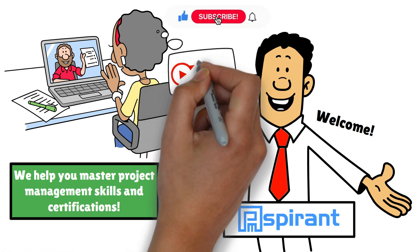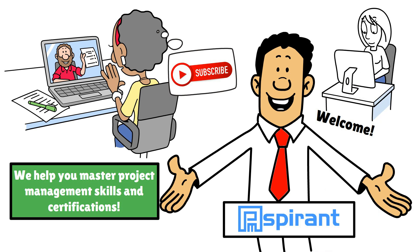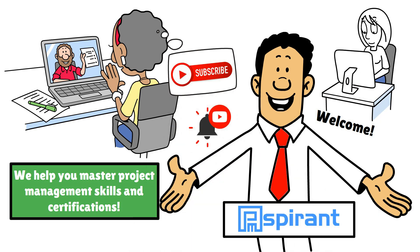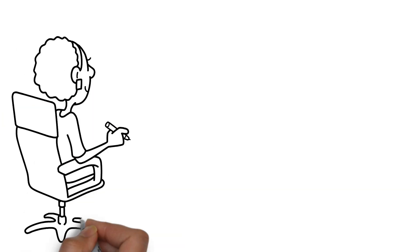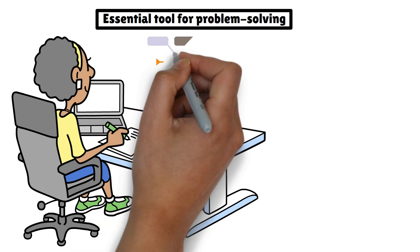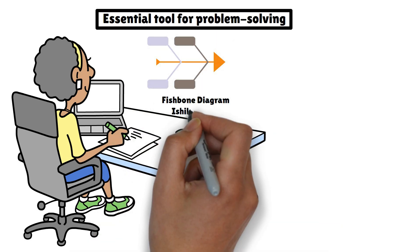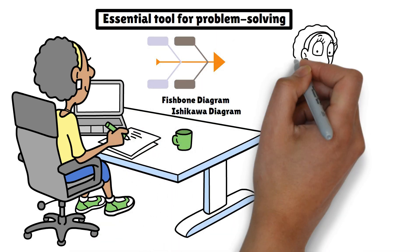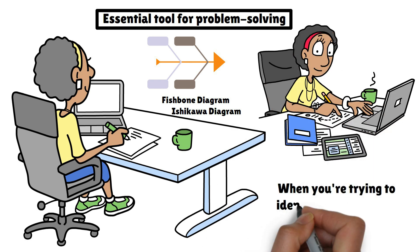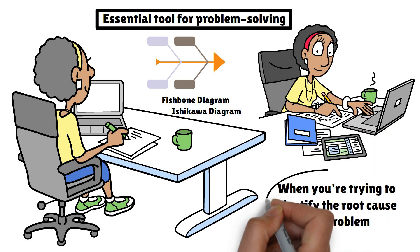If you haven't already, make sure to hit that subscribe button for more insightful content on project management. Today, we're going to dive into an essential tool for problem solving — the cause and effect diagram — also known as the fishbone diagram or Ishikawa diagram. This diagram is a very helpful tool, especially when you're trying to identify the root cause of a problem.